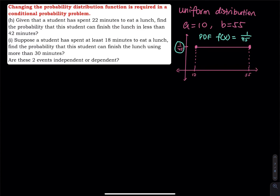Part H is: given that the student has spent 22 minutes eating lunch — meaning the student is still eating, so x is greater than or equal to 22 — find the probability that this student can finish lunch in less than 42 minutes, so P(x ≤ 42).